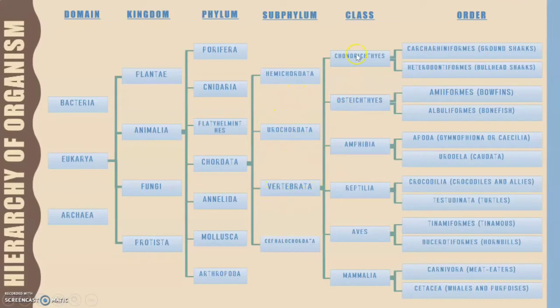For the class level, we have several classes which are Chondrichthyes, Osteichthyes, Amphibia, Reptilia, Aves, and Mammalia.